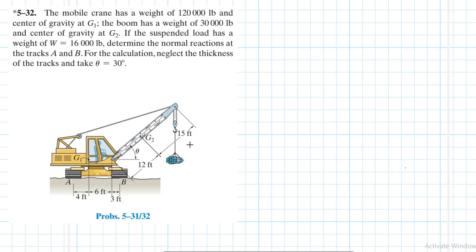Hello, I welcome you all to another interesting screencast. The problem reads: the mobile crane has a weight of 120,000 pounds and center of gravity at G1. The boom has a weight of 30,000 pounds and center of gravity at G2. If the suspended load has a weight of W equal to 16,000 pounds, determine the normal reactions at the tracks A and B. For the calculation, neglect the thickness of the tracks and take theta equal to 30 degrees.